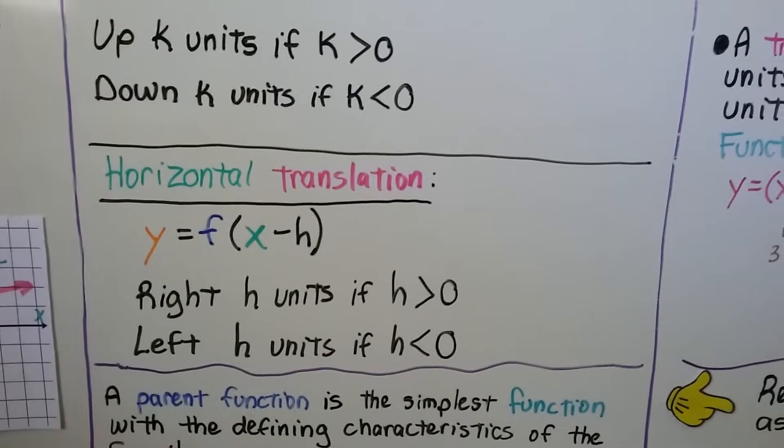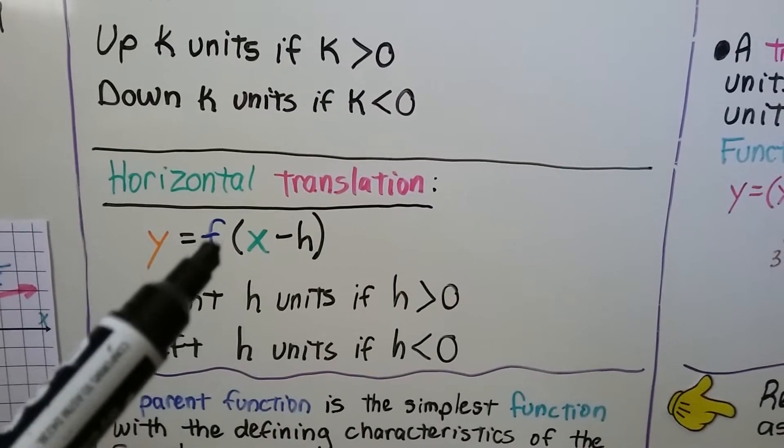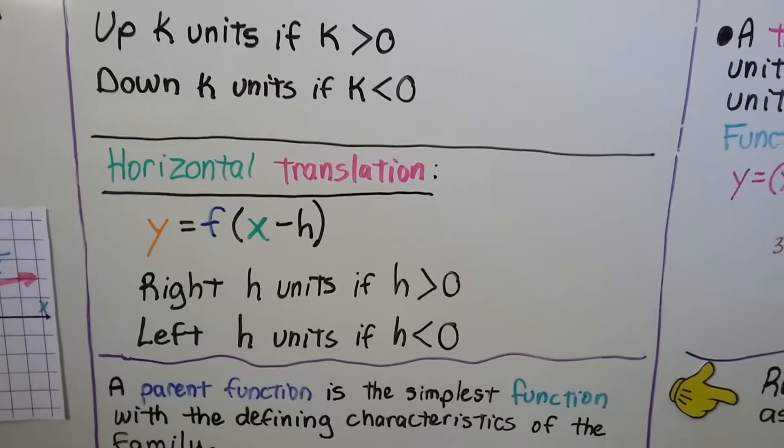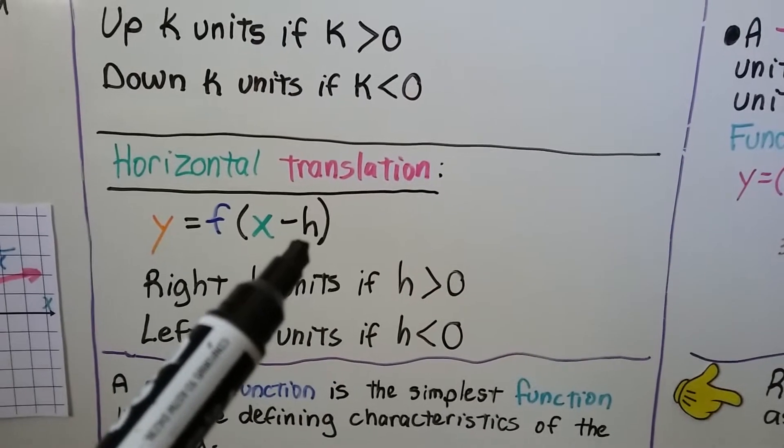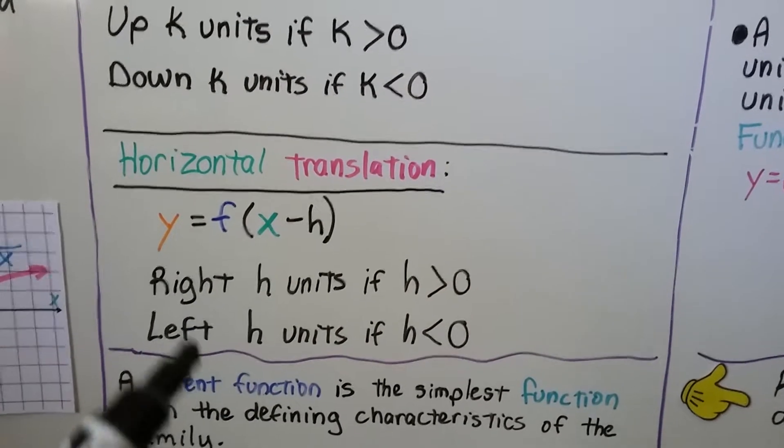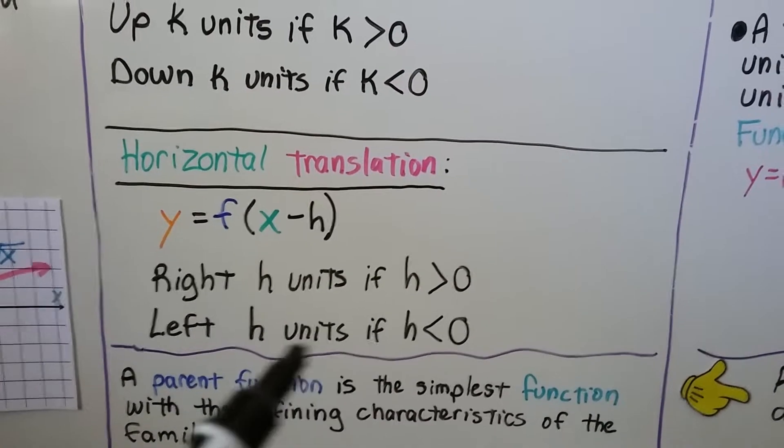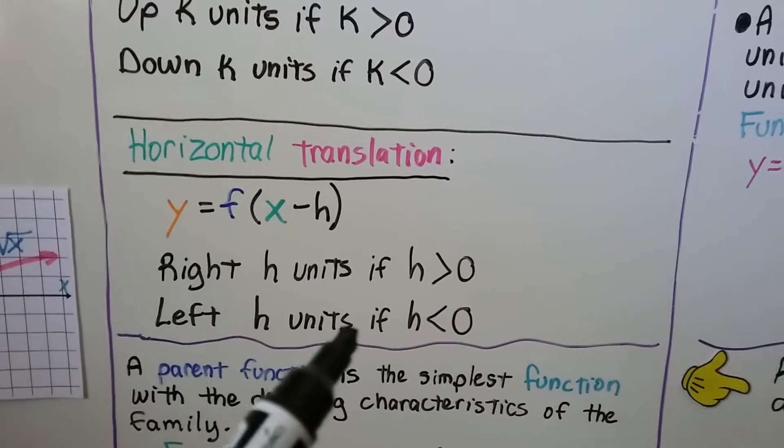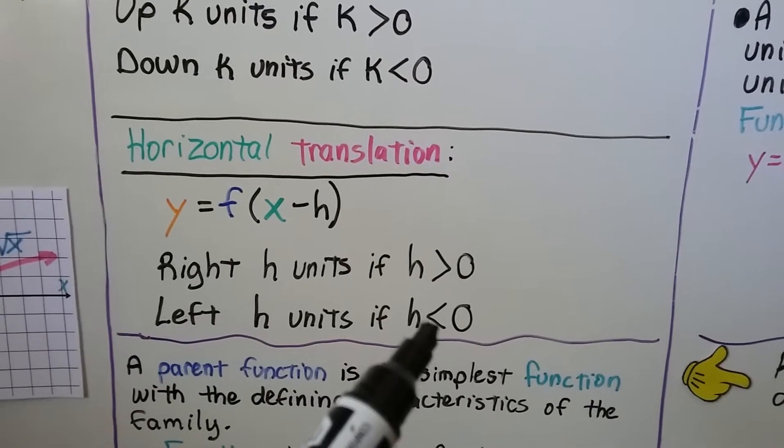For a horizontal translation, y equals f of x minus h. So that's going to be the horizontal left or right. It'll go right h units if h is greater than zero and left h units if h is less than zero.